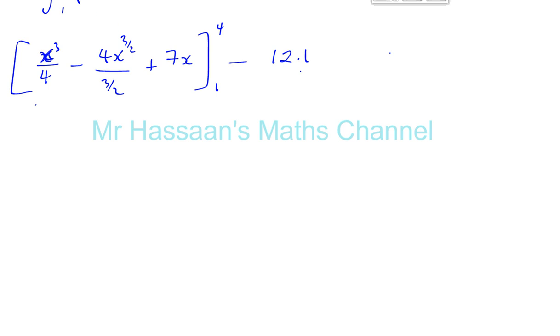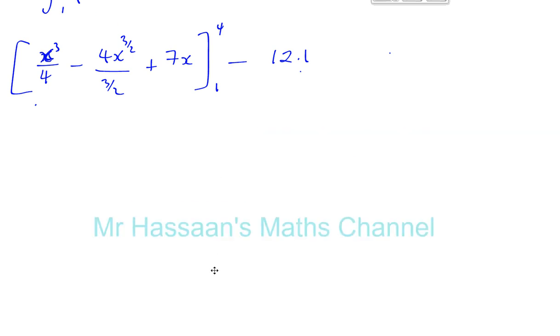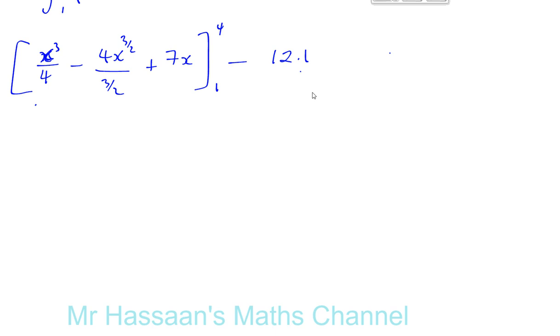So let's continue now. Let's simplify this expression first. So this is like 4 times 3 over, 4 divided by 3 over 2. So this is like 4 divided by 3 over 2, which is 4 times 2 over 3, which is 8 over 3. So you've got X cubed over 4 minus 8 over 3 X to the power of 3 over 2 plus 7 X minus 12.1.